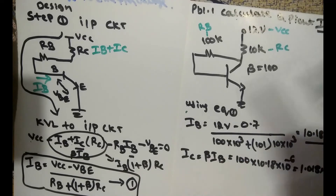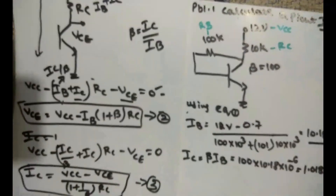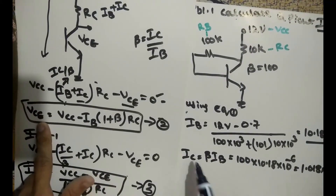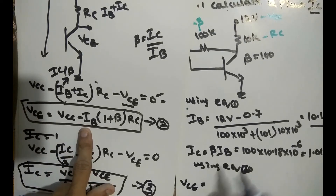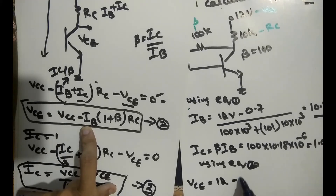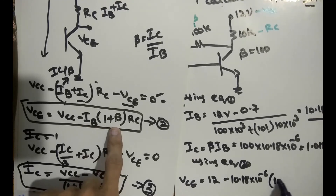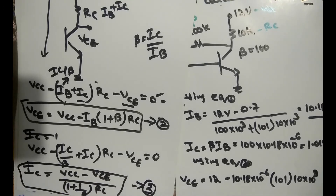Now calculate IC using IC equals beta times IB, so IC equals 100 times 10.18×10⁻⁶, giving IC equals 1.018 milliamps. Then for VCE using Equation 2: VCE equals VCC minus IB into (1 plus beta) into RC, so VCE equals 12 minus 10.18×10⁻⁶ times 101 times 10×10³. This gives VCE approximately equal to 1.72 volts.